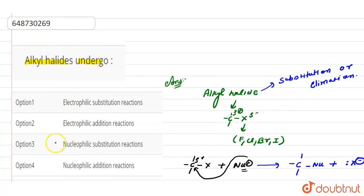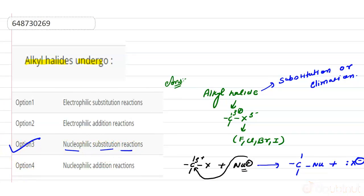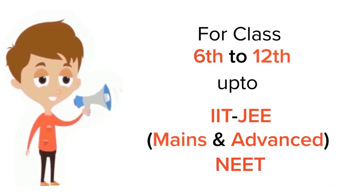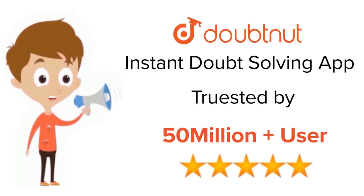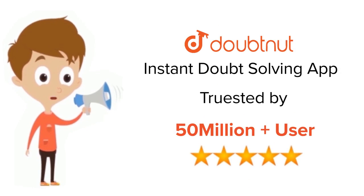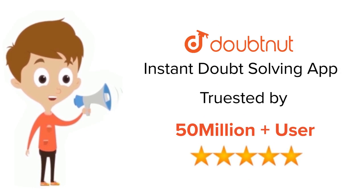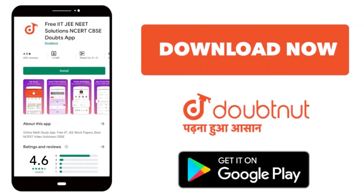So here we can say that the alkyl halide undergoes nucleophilic substitution reaction, so option 3 will be our correct answer for this question. Thank you. For class 6–12, IIT JEE and NEET level, trusted by more than 5 crore students — download the DoubtNut app today.